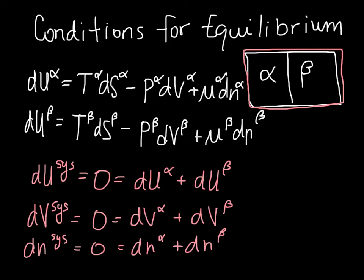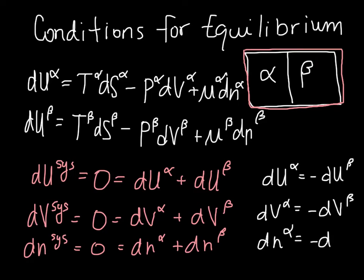So, we can substitute then that dU alpha is equal to negative dU beta, and that dV alpha is equal to negative dV beta, and dn alpha is equal to negative dn beta. We can then write an expression. So, we're going to substitute these things into here, and here, and here. And we are going to write an expression for the total entropy change of our system, because we saw that the criterion for equilibrium was that the entropy was maximized. So, if we make those substitutions, and we write an expression for dS of the system, when it is isolated, we end up with the following.